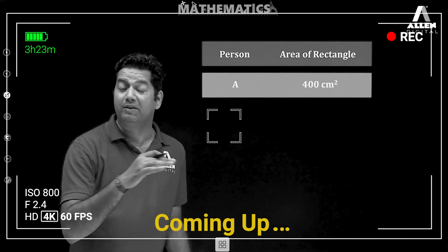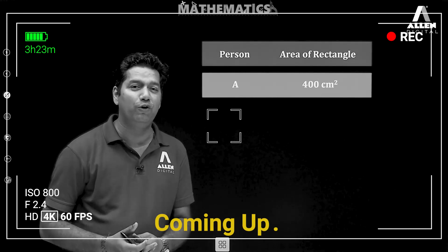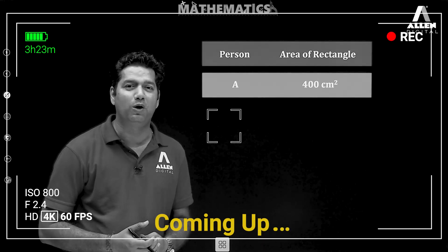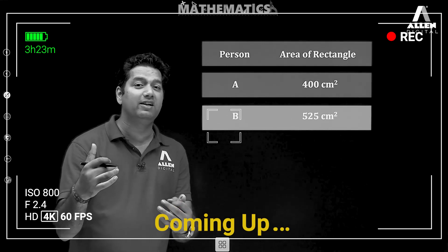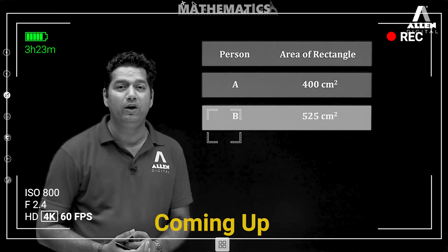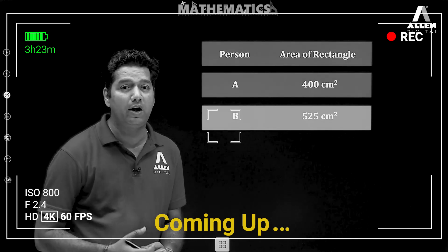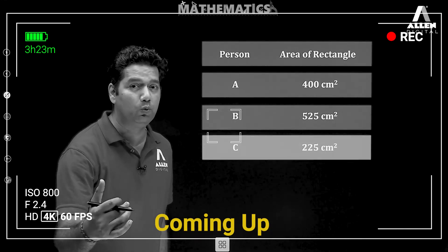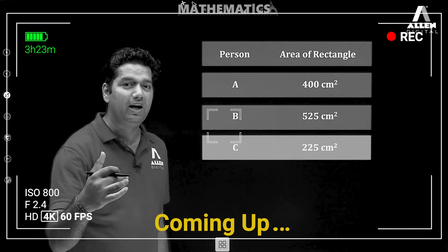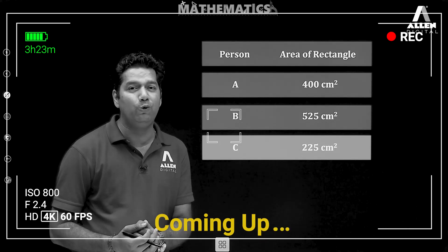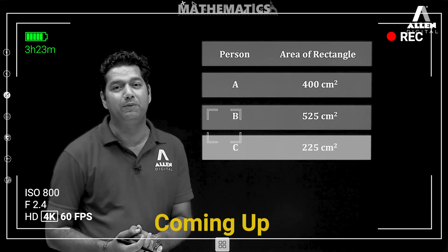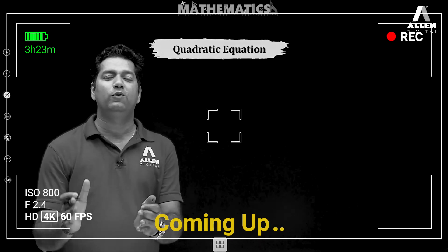By the first one, area is equal to 400 centimeter square. Second one, area of rectangle is equal to 525 centimeter square. And by the third one, area of the rectangle formed is equal to 225 centimeter square.